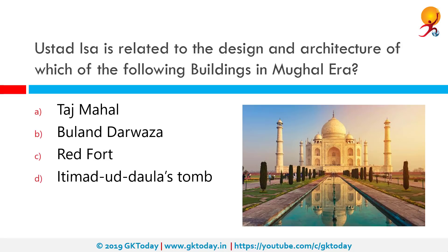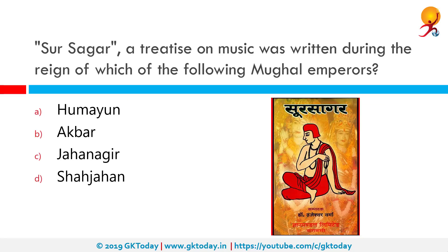Ustad Isa is related to the design and architecture of which of the following Mughal buildings? The correct answer is the Taj Mahal. Ustad Isa Shirazi was a Persian architect often described as the assistant architect of the Taj Mahal in Agra, India. Due to the lack of complete and reliable information as to whom the design credit belongs, scholars suggest the story of Ustad Isa was born of the eagerness of the British in the 19th century to credit such a beautiful building to a European architect.